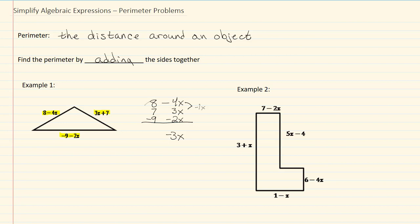Now I have 8 plus 7, working with just my numbers, which would give me 15. And 15 minus 9 will give me 6. So my answer then is going to be 6 minus 3x.